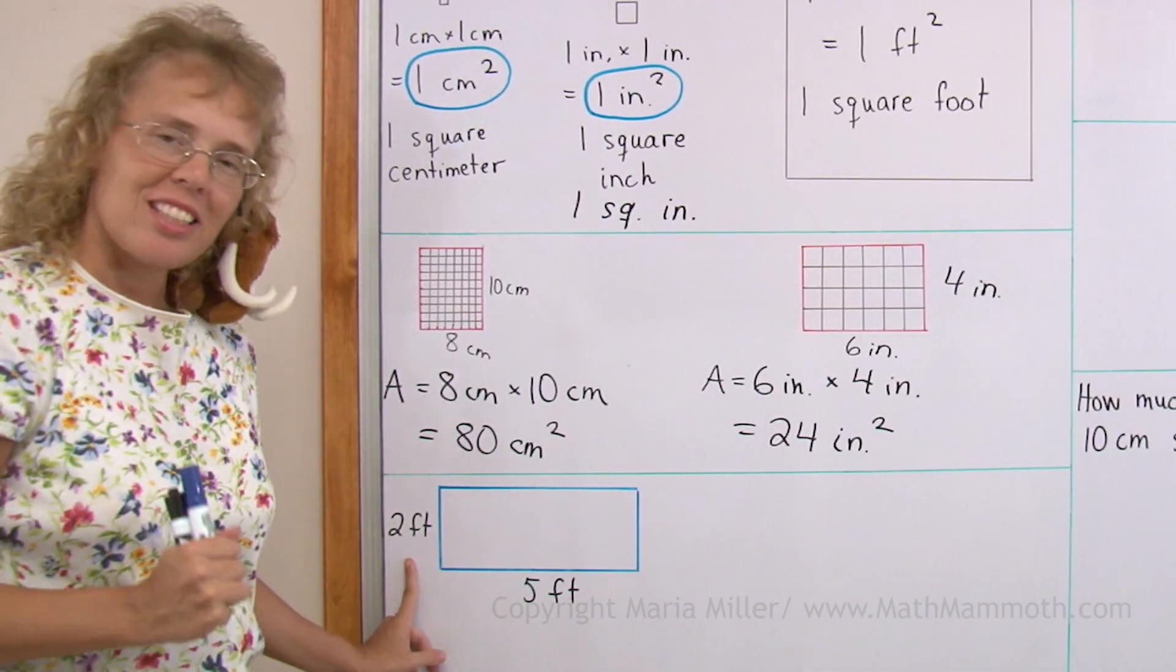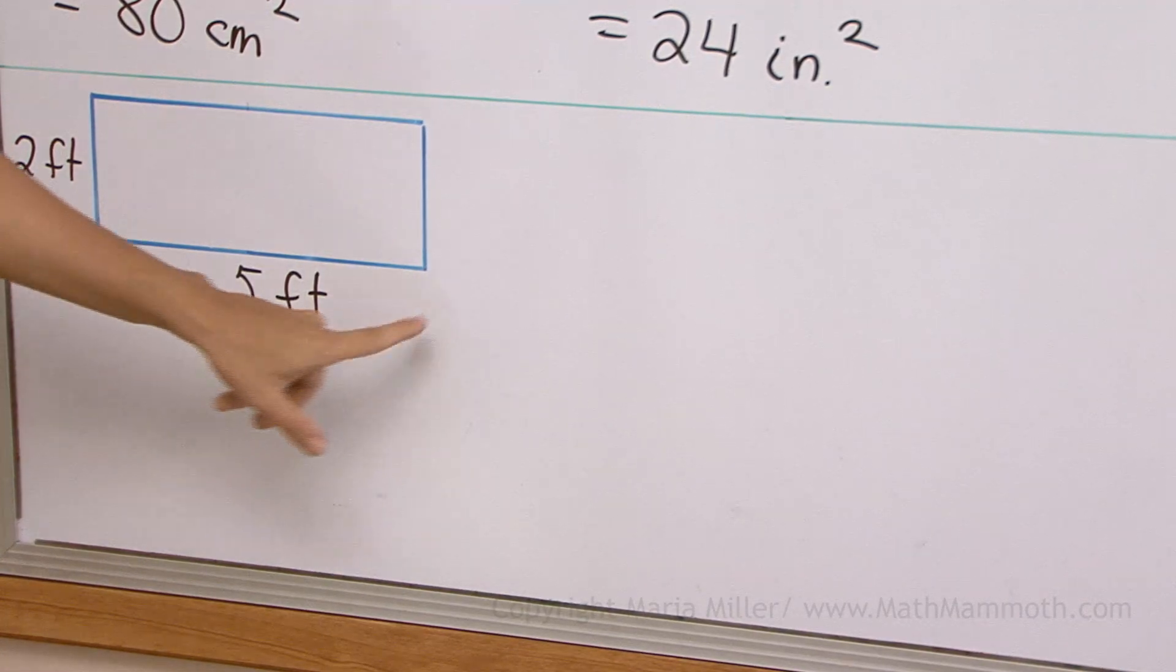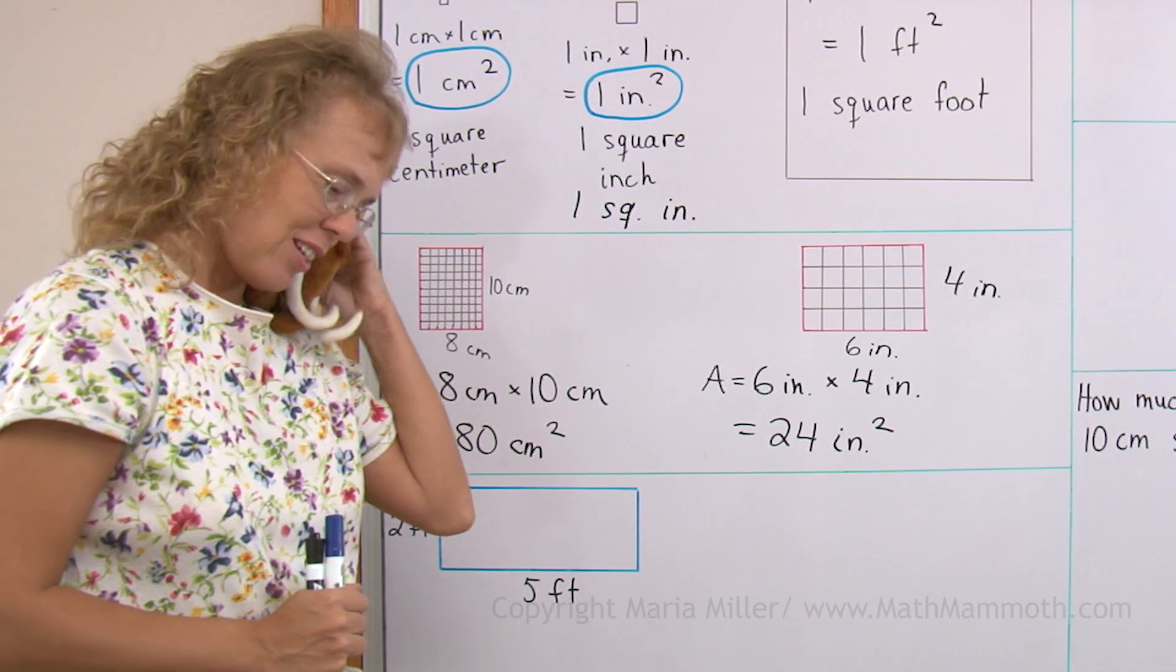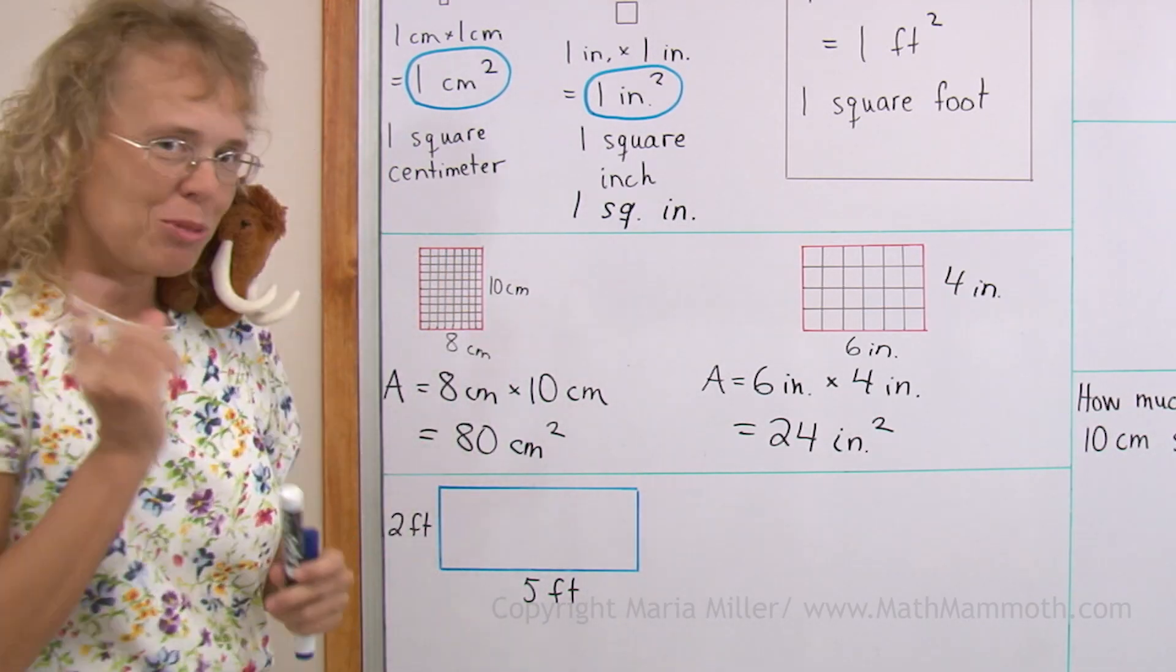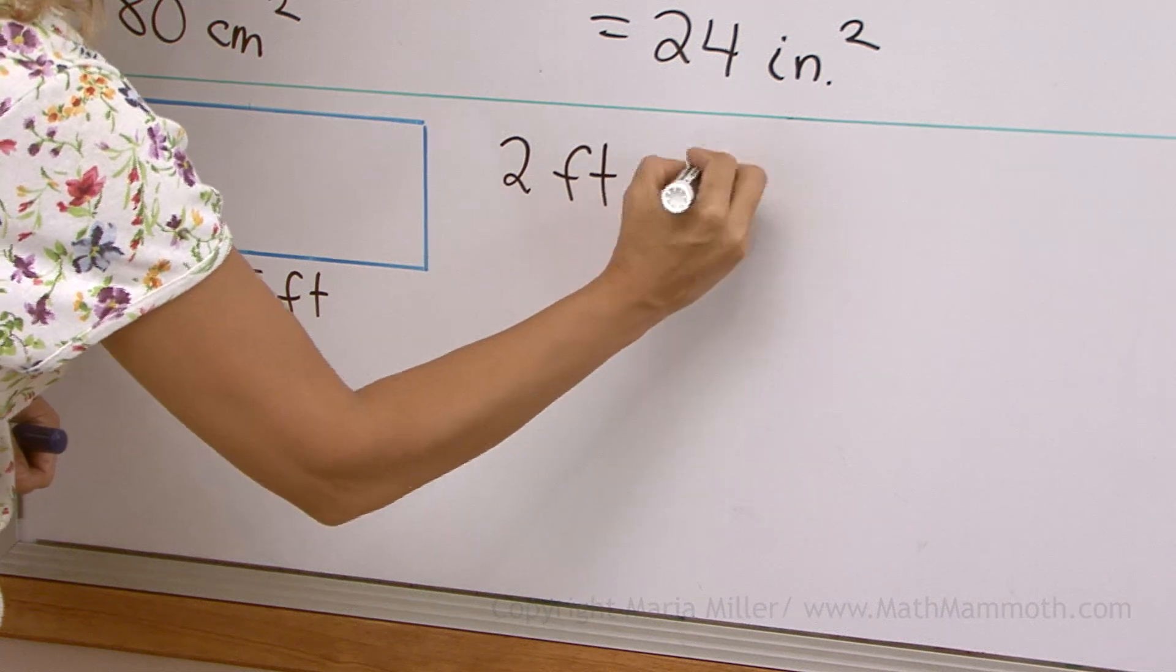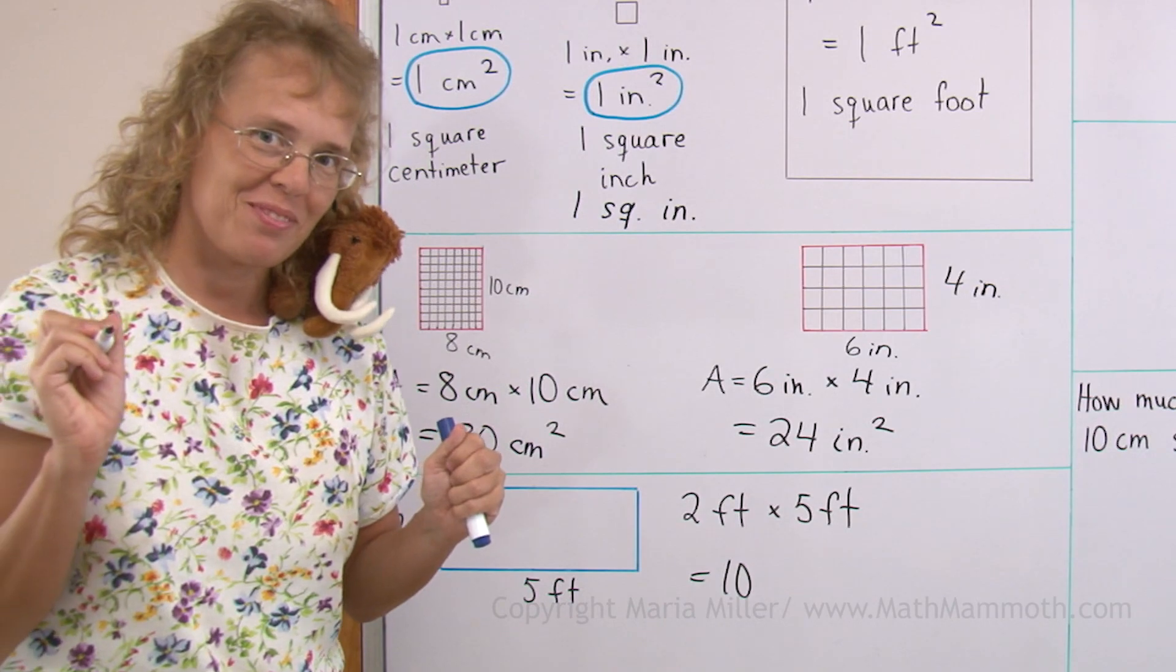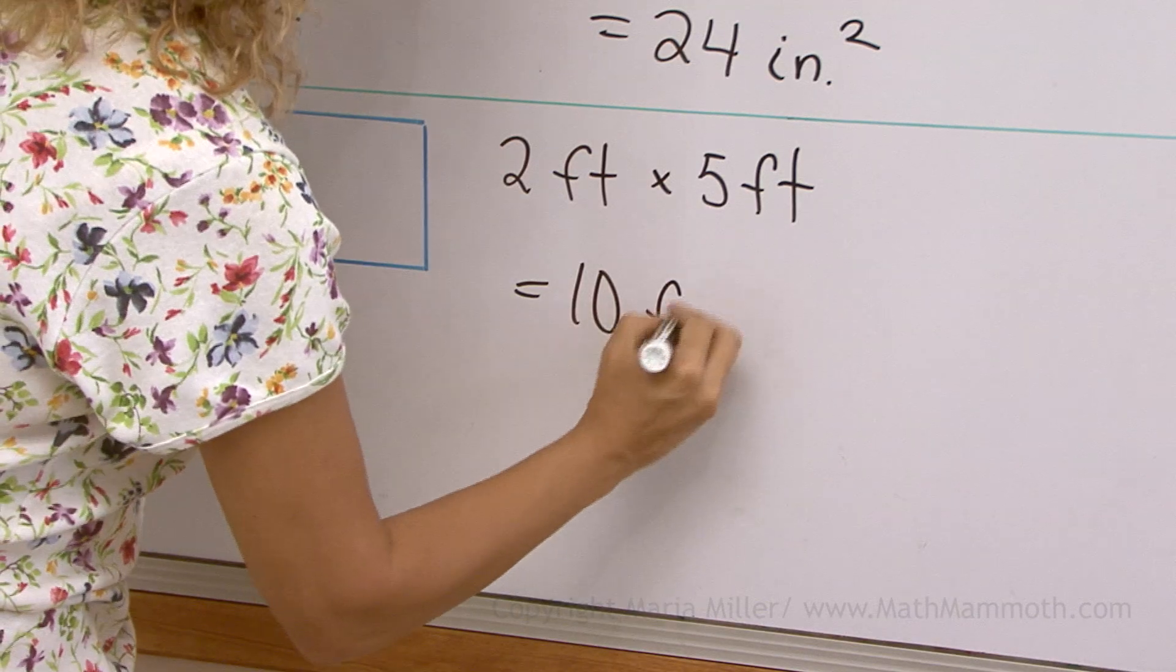How about the area of this rectangle? One side is 2 feet, the other one is 5 feet. Oh, Mathie knows the answer. I'm sure you do too. You multiply 2 feet times 5 feet, and we get 10. But 10 what? Square feet. Yes.